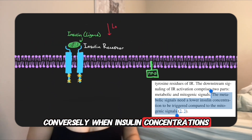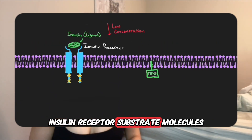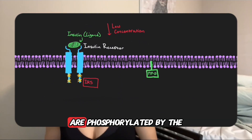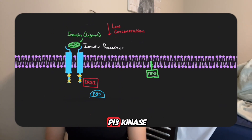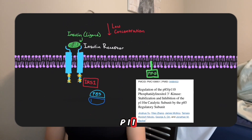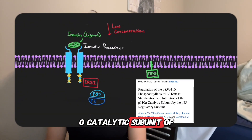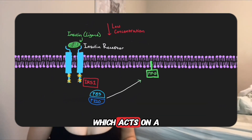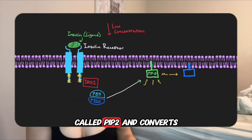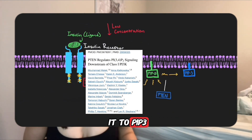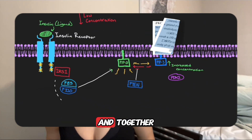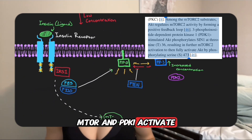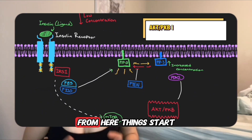Conversely, when insulin concentrations are low, insulin receptor substrate molecules — IRS molecules — are phosphorylated by the insulin receptor. IRS-1 then recruits and binds to the P85 subunit of PI3 kinase, activating the P110 catalytic subunit, which acts on a molecule attached to the cell membrane called PIP2 and converts it to PIP3. PIP3 then recruits PDK1, which indirectly activates mTOR, and together mTOR and PDK1 activate the AKT, or PKB, molecule.